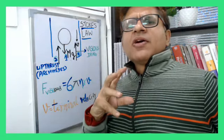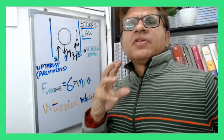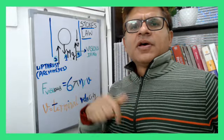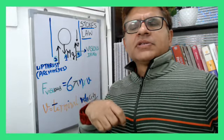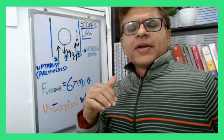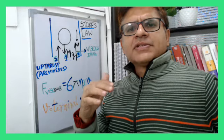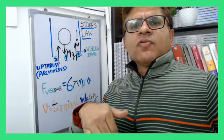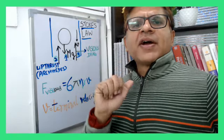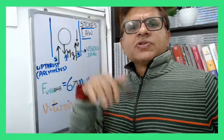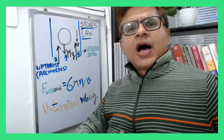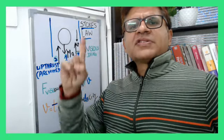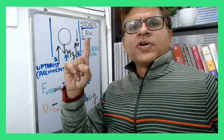Now let's think of the free body diagram. There are three forces acting on this: weight downwards, upthrust due to Archimedes principle upwards, and viscous drag. Since the velocity is downward, the liquid applies a viscous drag on it. So you have three forces: weight, upthrust, and viscous drag or viscous force.